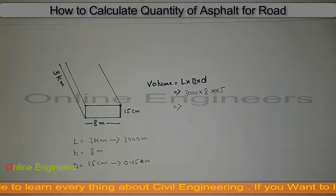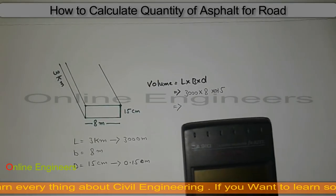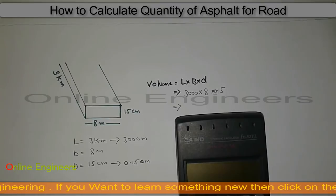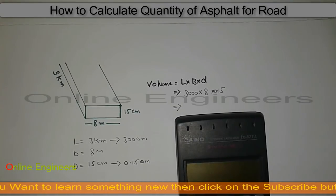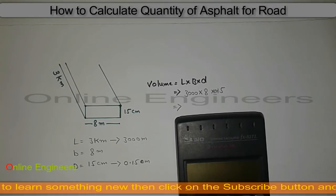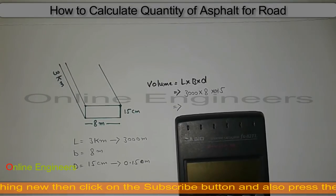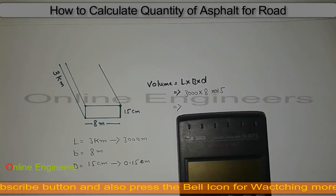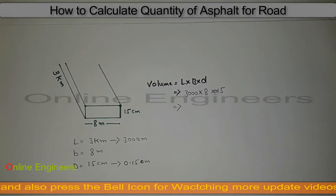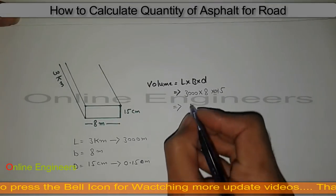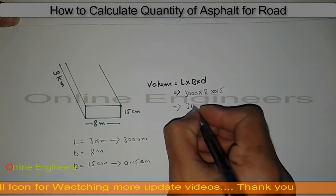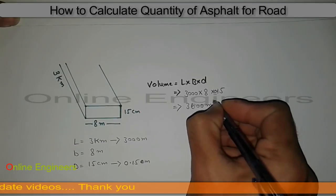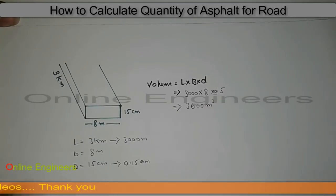Now we can find out the volume for this road section. Calculating these values: 3000 × 8 × 0.15, which gives us the answer 3600 cubic meters.